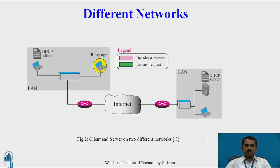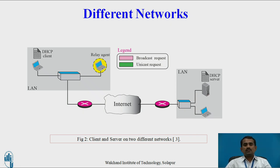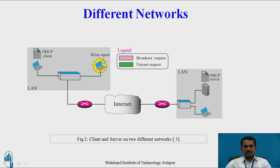Next is the different network operation. Here, both client and server are in different networks. The client is in one network, and after preparing the packet, it sends the data through the internet to another network where the server is located. If the client sends a unicast message through the internet, the server may not receive it because it is not possible to send unicast across networks directly. For this purpose, we have to use a relay agent. The relay agent converts a broadcast request to a unicast request, and unicast request to broadcast.